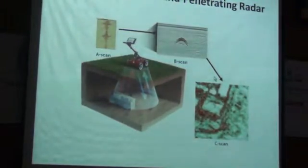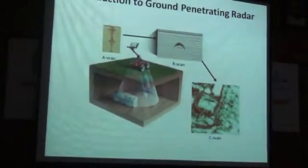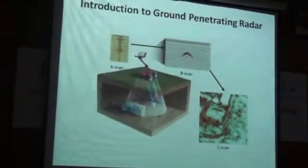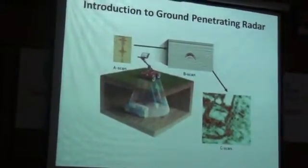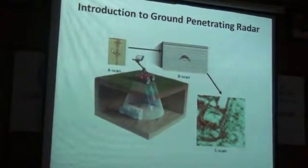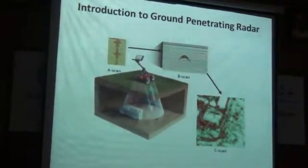In GPR, whenever we are talking, you always come through terms like A scan, B scan and C scan. A scan is nothing but looking at a single pulse of energy going down and coming back. B scan is putting these pulses together in a two-dimensional image. And C scan is putting in a three-dimensional image.